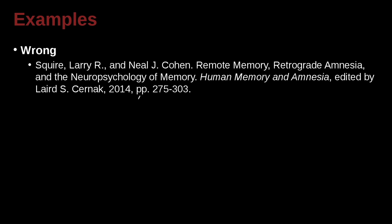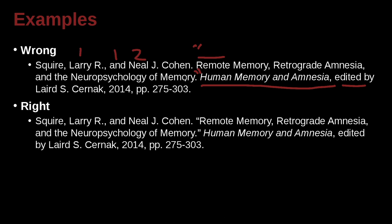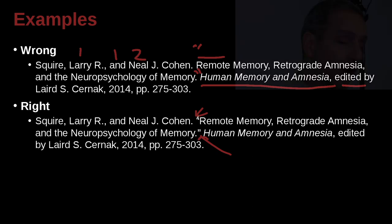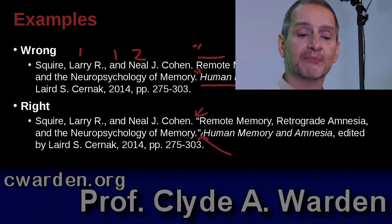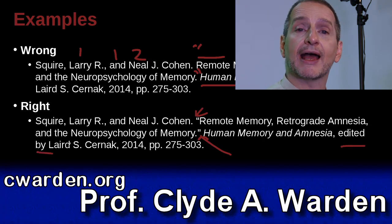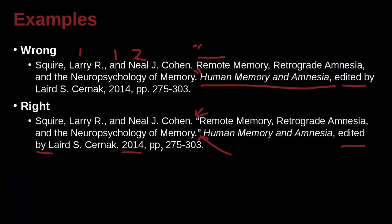Squire, Larry R., and Neil J. Cohn — once again we've got the first author and the second author. We use 'and,' and since we have two authors, not three, we can write them out. The article is 'Remote Memory, Retrograde Amnesia, and Neuropsychology of Memory,' inside the book Human Memory and Amnesia, which is edited by someone — so this must be a chapter inside the book. That's a little bit of a problem, because something smaller inside a container needs to be inside quotation marks. So the correct way to write this would be opening quotation marks and closing quotation marks — that tells us this is something smaller, a piece of a larger work, in this case a chapter from a book. And this is 'edited by,' so we write out the whole 'edited by.'